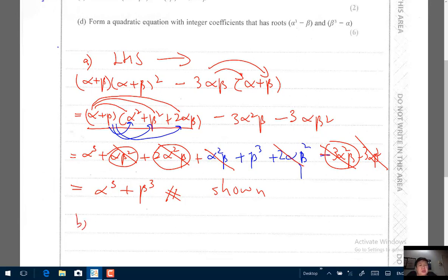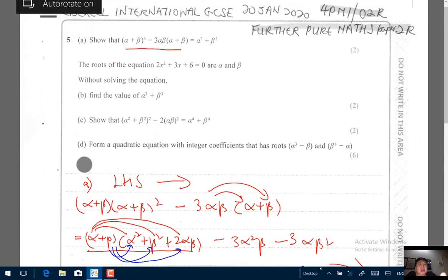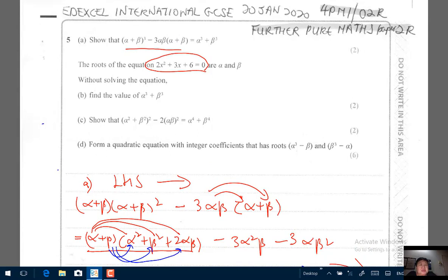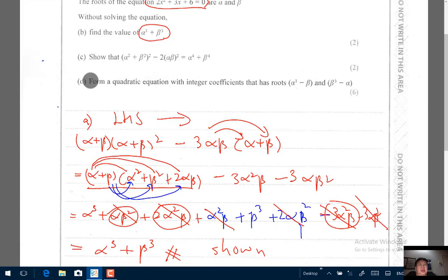So it is shown, you've proven it. This is pretty straightforward, just that you have to be really careful with expansion. The second part is without solving the equation, find the value of α³ + β³ given the roots of the equation α, β in 2x² + 3x + 6.